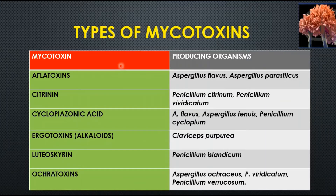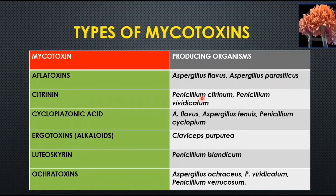Toxin production is dependent on many factors including genetic potential, environmental conditions, light, aeration, inhibitors, and competitive growth. Important mycotoxins and their producing organisms include: aflatoxin produced by Aspergillus flavus and Aspergillus parasiticus; citrinin produced by Penicillium citrinum and Penicillium viridactum; cyclopiazonic acid by Aspergillus flavus, Aspergillus tamarii, and Penicillium cyclopium; and ergot alkaloids by Claviceps purpurea.